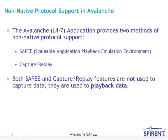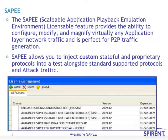Both SAPI and Capture Replay features are not used to capture data — they are used to playback data. The SAPI licensable feature provides you with the ability to configure, modify, and magnify virtually any application layer network traffic, and is perfect for P2P traffic generation.